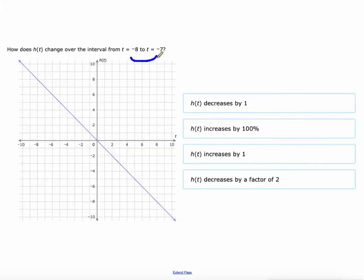All right, what about over this interval? Okay, again, notice that the interval is 1. All right, so at negative 8, the output is 8. And at negative 7, the output is 7. So over this interval, what happened to the value of the function? It went down by 1. There it is. h of t decreases by 1.